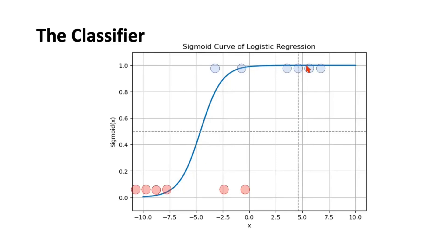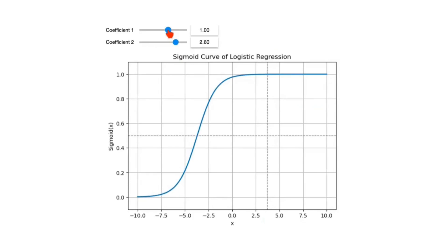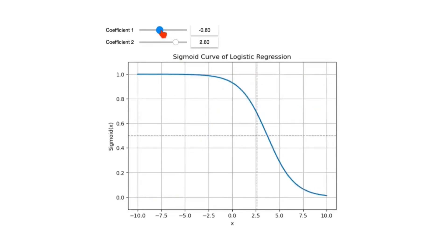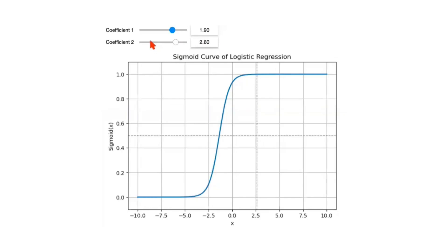I've only changed the values of the constant β₀ so far. If we adjust β₀ to an intermediate value and also change β₁, you can see the sigmoid changes entirely. This is a nice visual representation of how the sigmoid curve is affected when you change coefficient values.